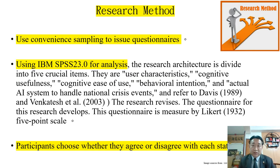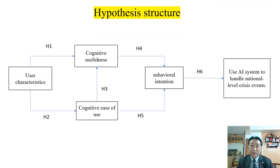Research method. Using convenience sampling to issue questionnaires and IBM SPSS, participants choose whether they agree or disagree with each statement. The hypothesis structure includes H1, H2, H3, H4, H5, and H6 — six stages.